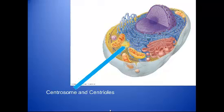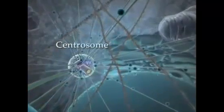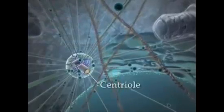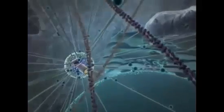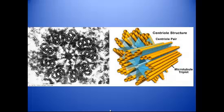Microtubules arise from a part of the cell called the centrosome. The centrosome is made up of two bodies called centrioles, and this ends up being the microtubule generating center. Microtubules are formed near the nucleus — this structure lies very close to it. These are the two paired centrioles made up of microtubules, and those are used to generate more microtubules within the cell.